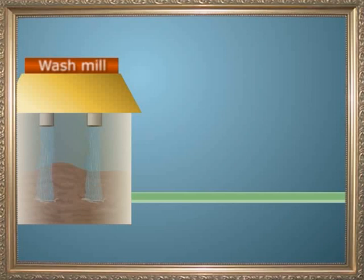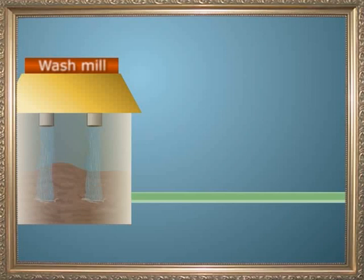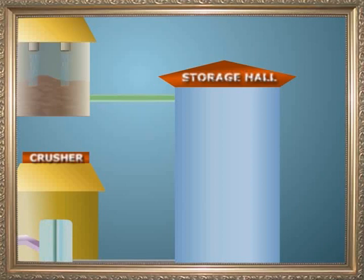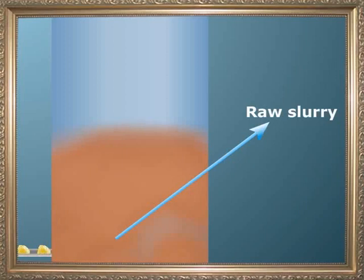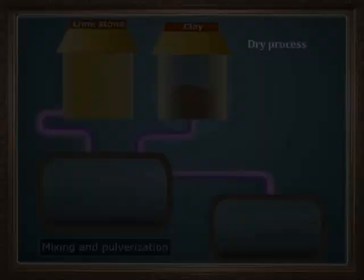For the wet process, clay is purified by washing it in a wash mill. Then limestone is crushed into small pieces and mixed with the purified clay in appropriate proportions to get a substance called the raw slurry. However, this slurry would still contain 40% water. This slurry is made into a uniform mixture by the mixer machine.